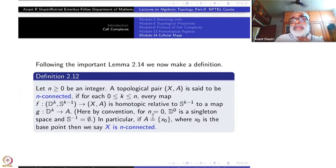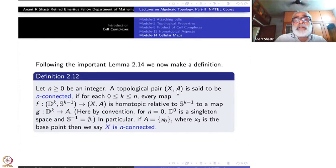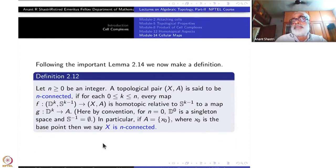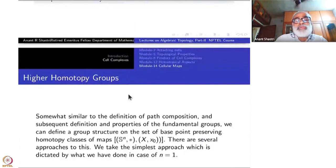By convention, D^0 is a singleton and S^{−1} is the empty set. In particular, if A is a single base point x_0, we simply say X is n-connected rather than mentioning the pair. The condition is the same; we just drop mention of A when A is a single point.